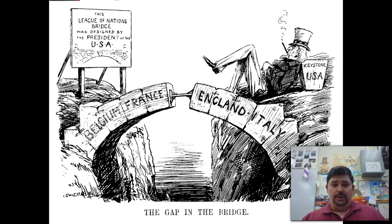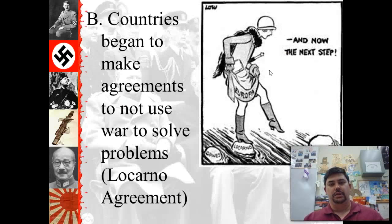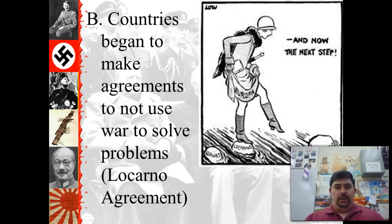A political cartoon basically says: America, it was designed by your president — you guys should be the keystone, the thing that brings it all together. Meanwhile, countries are making agreements to prevent further wars.